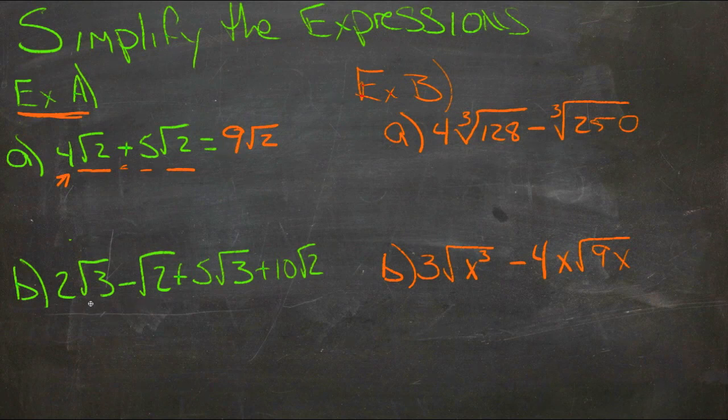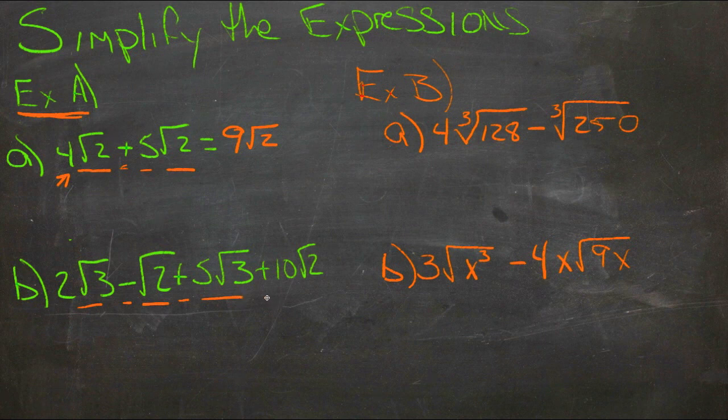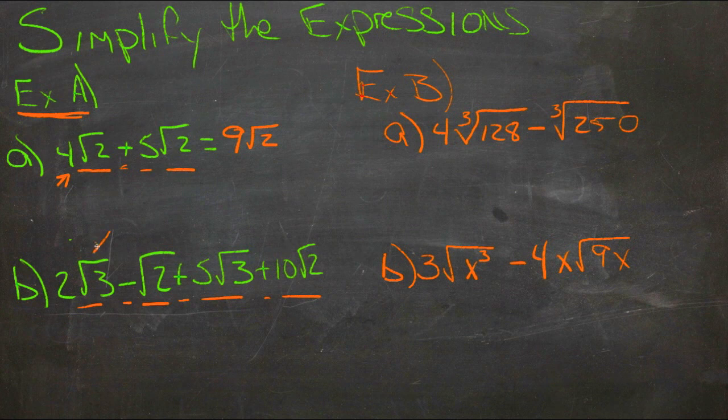Here we have 2 roots of 3, and we're subtracting 1 root of 2, we're adding 5 roots of 3, and then adding 10 roots of 2. Well, we have roots of 3 here, and...